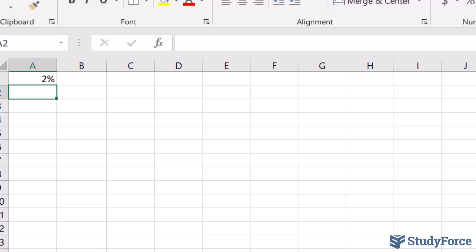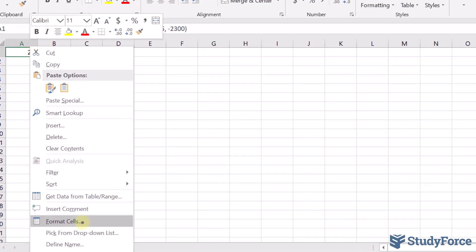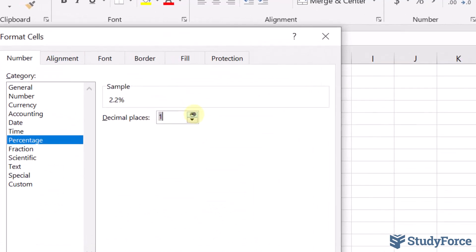We end up getting a value of 2%. Now, don't be fooled by this. You do want to carry at least six decimal places if they exist. So right-click on it, go to format cell, and put six decimal places.